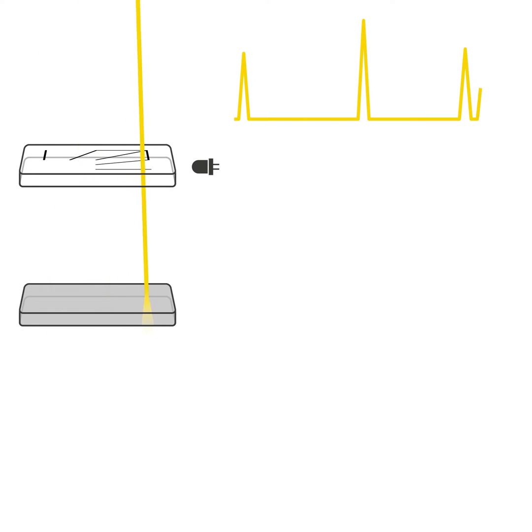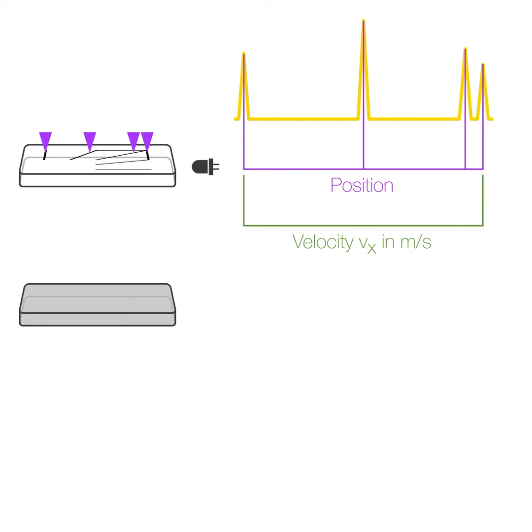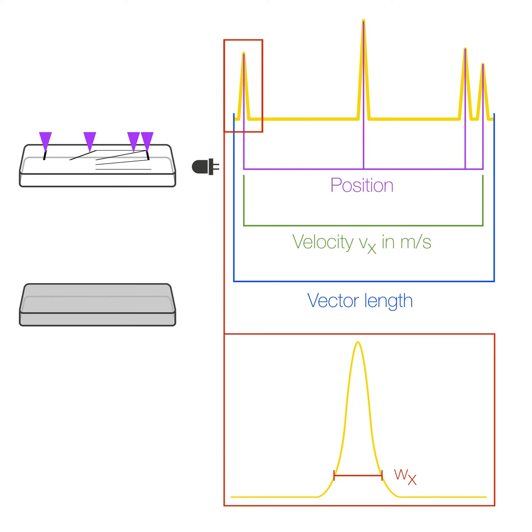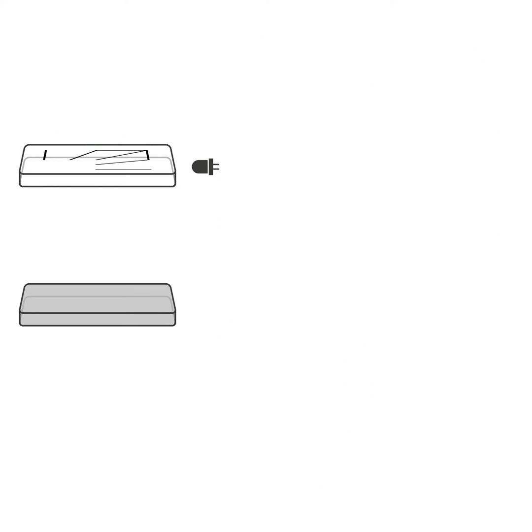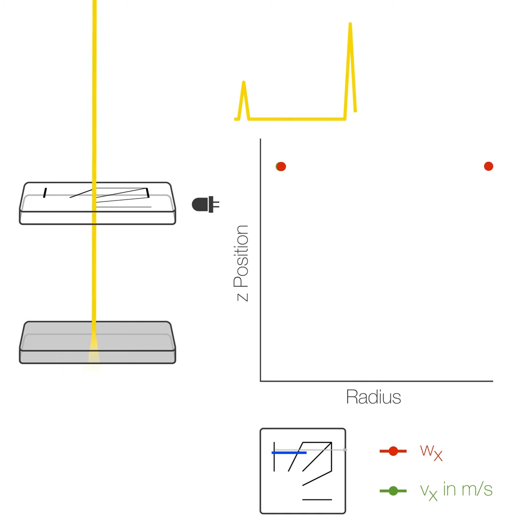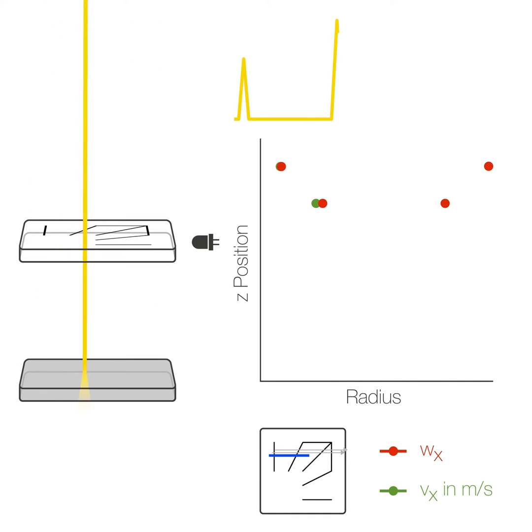Every measurement contains beam position, scanning speed, vector length, and beam radius based on a Gaussian fit. Running acoustic, the SFM provides all relevant beam quality parameters.